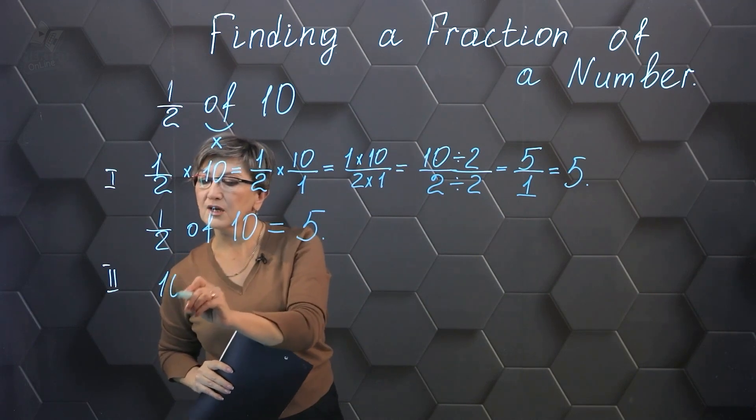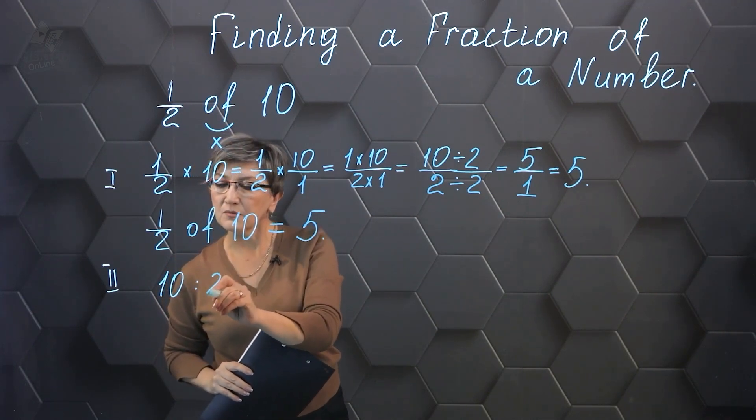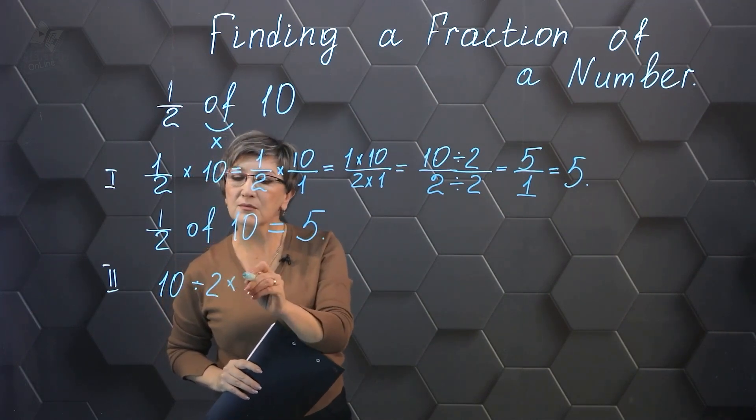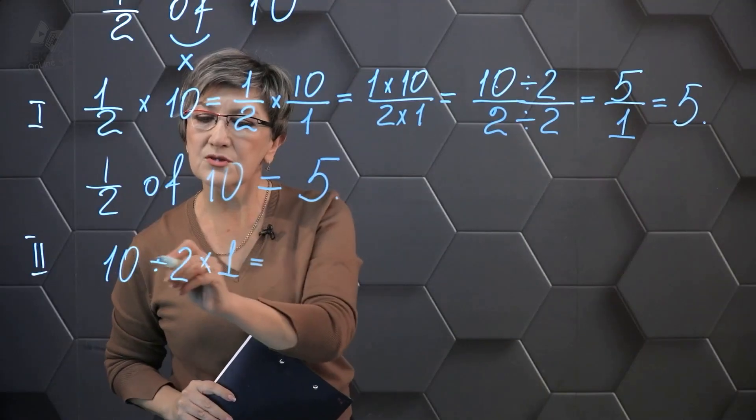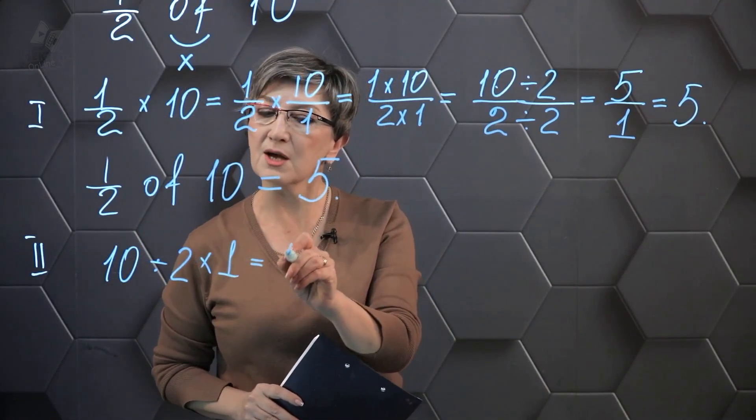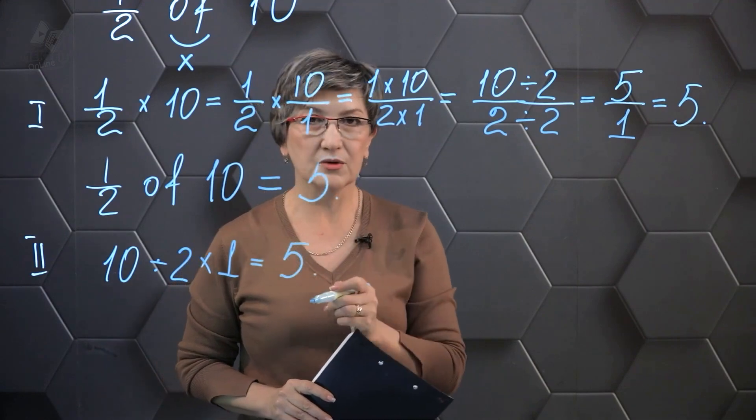Initially, we divide 10 by 2 and then multiply the result by 1. 10 divided by 2 is going to be 5, and 5 multiplied by 1 is going to be 5.